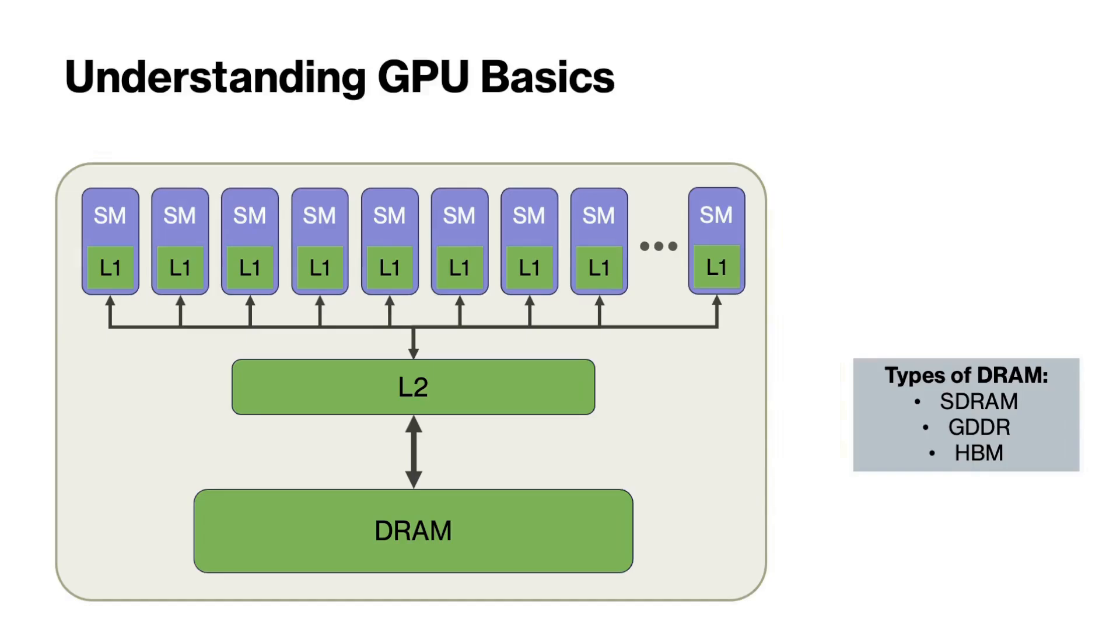Arithmetic computations are performed at streaming multiprocessors or SMs for short. The L1 cache is a small but very fast memory located within each streaming multiprocessor. The L2 cache is larger than L1 and serves as an intermediate layer for memory between the DRAM and L1 cache. Both L1 and L2 are referred to as SRAM or static random access memory.